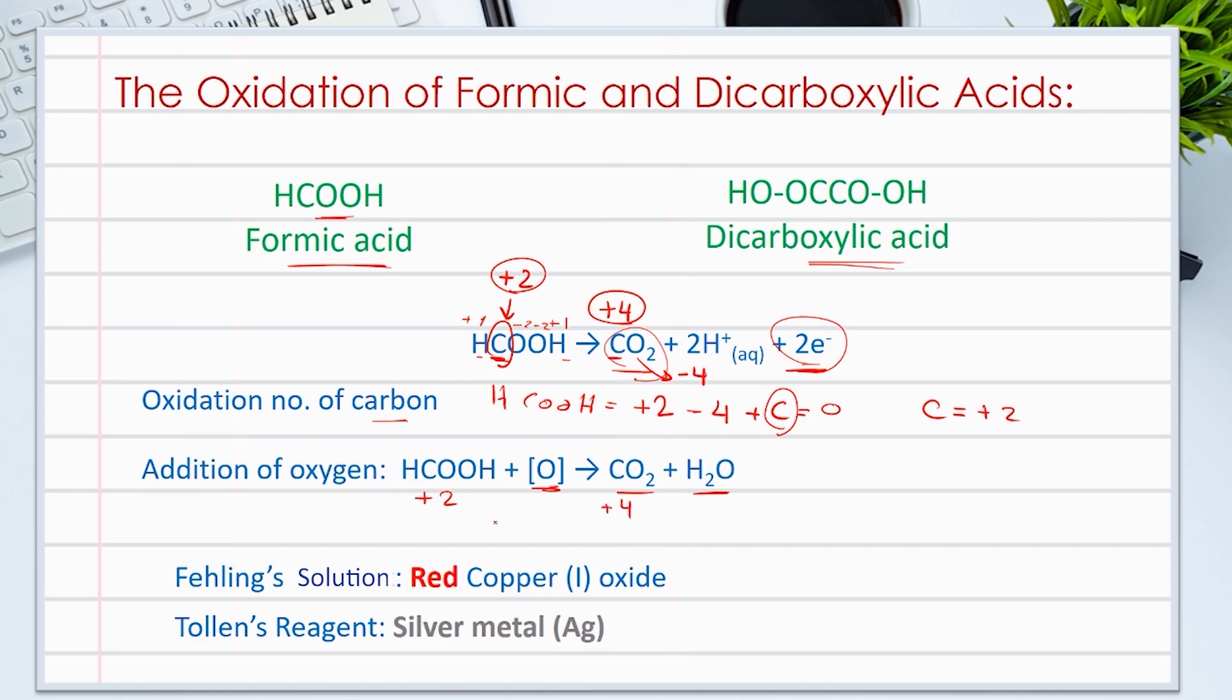Usually, this ability to act as a reducing reagent or to be oxidized is used to test for the presence of formic acid using Fehling's solution or Tollen's reagent. Where Fehling's blue-colored solution changes into the red solution due to the formation of copper-1 oxide. Similarly, the Tollen's reagent oxidizes formic acid and silver metal is formed.